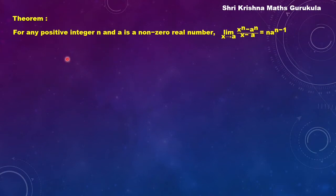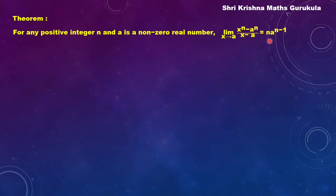Now let us state the theorem. For any positive integer n and a is a non-zero real number, the limit of x to the power n minus a to the power n by x minus a, as x tends to a, is equal to n into a to the power n minus 1. So n is a positive integer in this case.